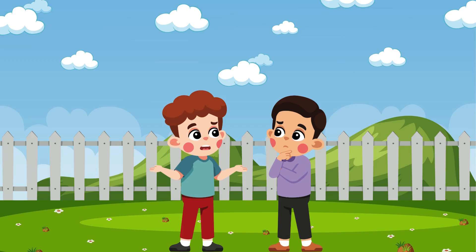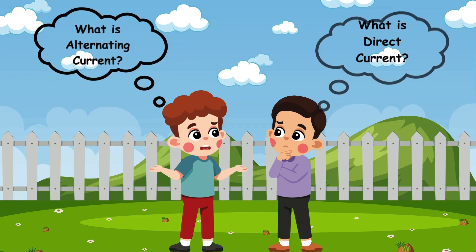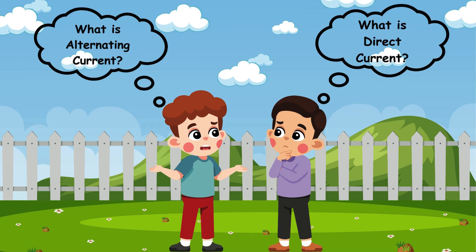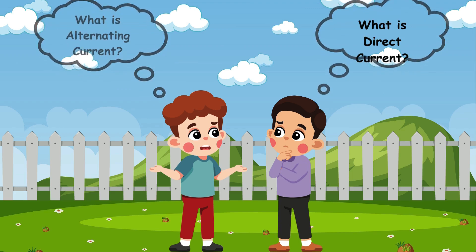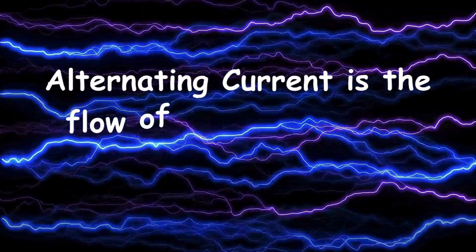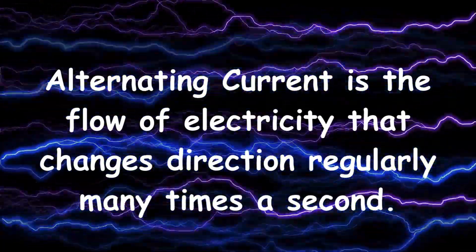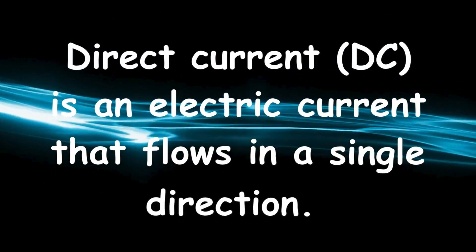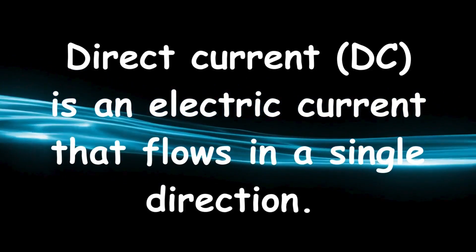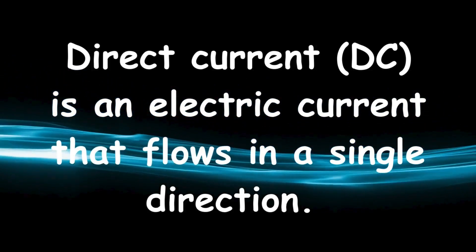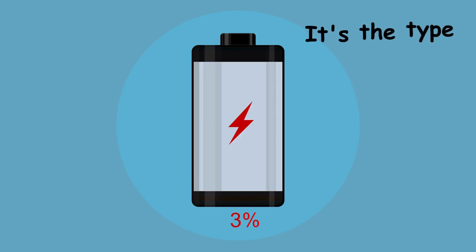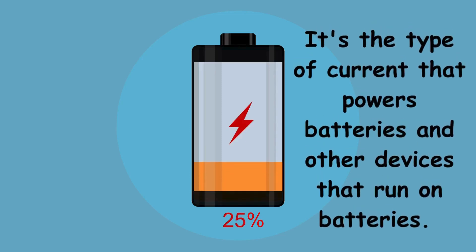But I don't understand, what is alternating current? And also, what is direct current? Alternating current is the flow of electricity that changes direction regularly many times a second. Whereas, direct current, DC, is an electric current that flows in a single direction. It's the type of current that powers batteries and other devices that run on batteries.